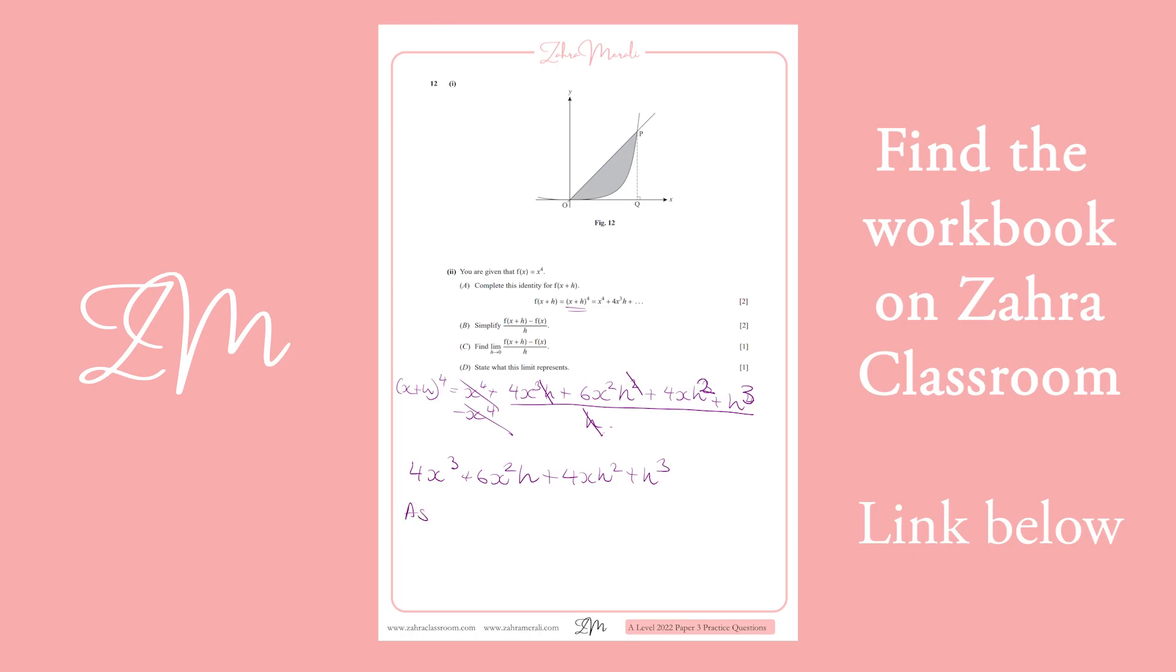And we then say, as h goes towards 0, 6x squared h, 4x h squared and h cubed all tend to 0. Therefore, f dash x equals, if we see that we've cancelled everything out, we're left with 4x cubed.